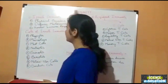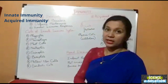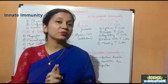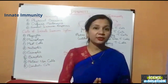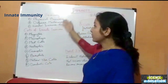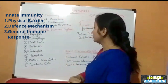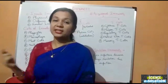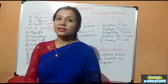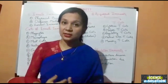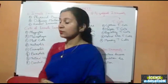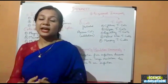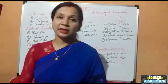Immunity in our body is of two types: innate immunity and acquired immunity. Innate immunity is present from birth onwards and is the first line of defense against antigens. It is general and non-specific, with components like physical barriers, defense mechanisms, and general immune responses. Physical barriers include our skin, body hairs, the gastrointestinal tract, and the respiratory tract. Defense mechanisms include tears in our eyes, saliva in our mouth, and acid in our stomach, all of which help destroy many antigens.